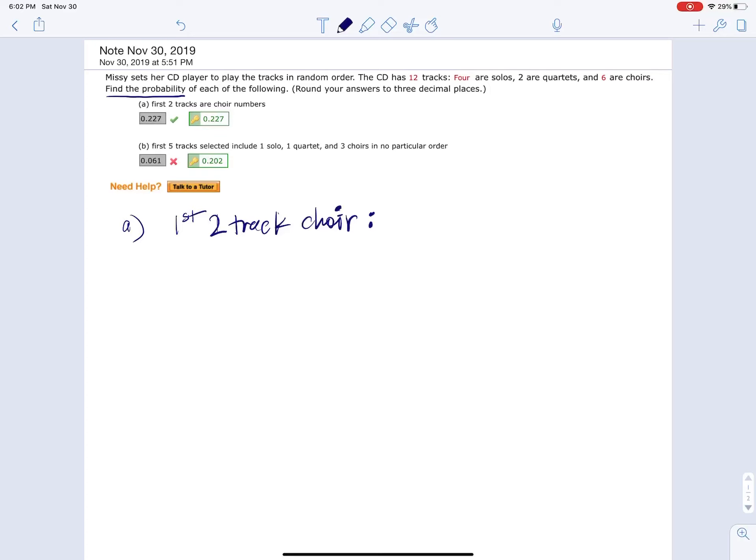Okay, so how many ways can the first two tracks be choir numbers? Let's see how many ways we can get that. There are six choir numbers, so for the first track there's six possibilities. For the second track there's five possibilities. That's how you find that.